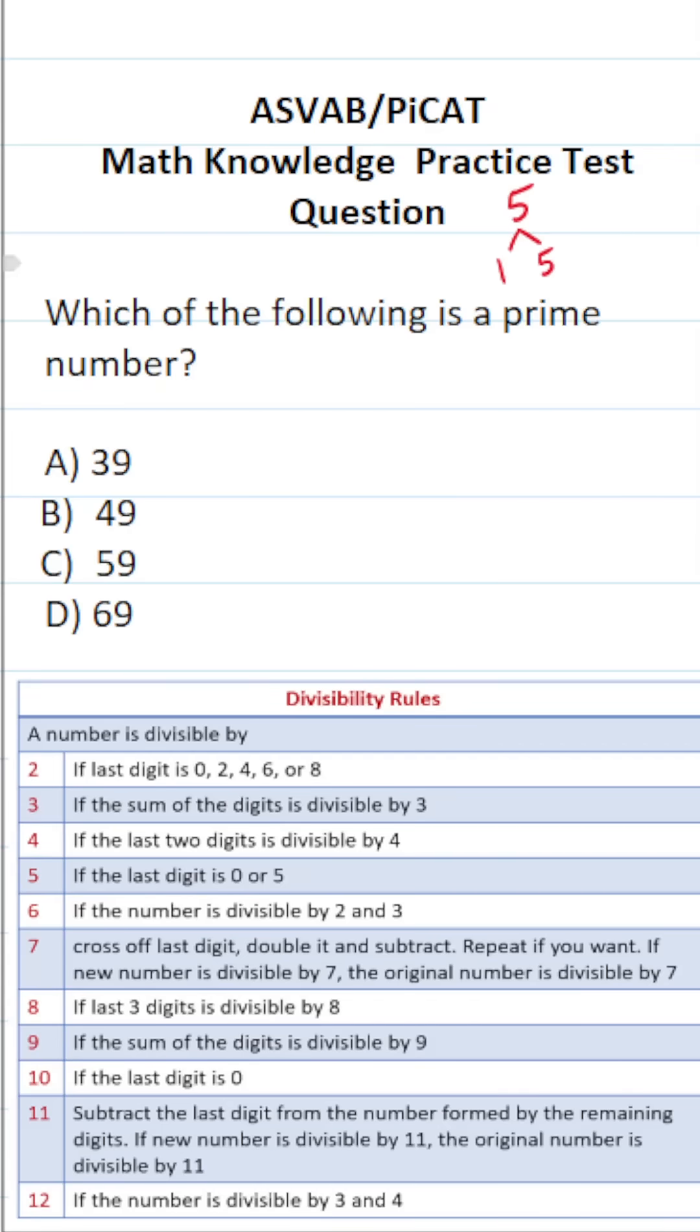Now to quickly determine which of these numbers is prime, we can make use of divisibility rules to see if these numbers are divisible by something other than one and itself. Specifically, we're going to use the divisibility rules for two, three, and five if needed.